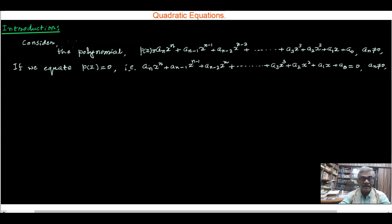then it is called a_n x^n + a_(n-1) x^(n-1) + ... + a_1 x + a_0 = 0, a_n not equal to 0, and then it is called a polynomial equation of degree n.